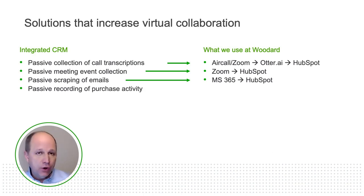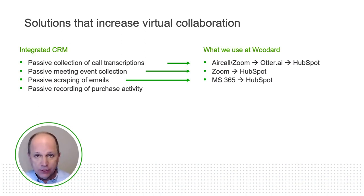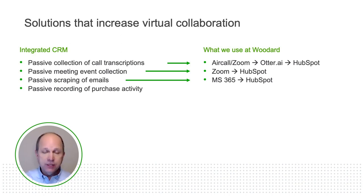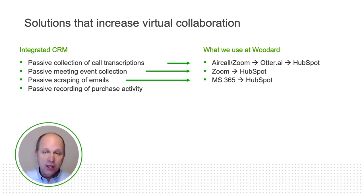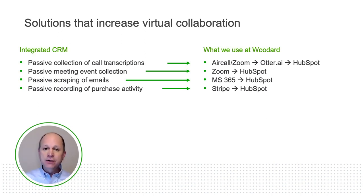You've also got passive recording of purchase activity. Every time somebody buys something from you — however they pay, whether through Bill.com's accounts receivable module, QuickBooks Online's invoicing tool, or whatever else — that thing needs to talk to your CRM so everybody has visibility into account status. At Woodard, we use Stripe. Stripe talks to QuickBooks, Stripe talks to HubSpot, Stripe talks to a lot of things — we have them all tied out and integrated.